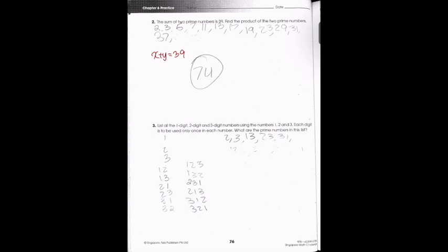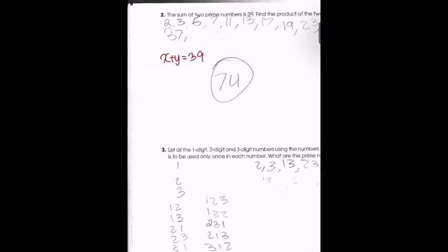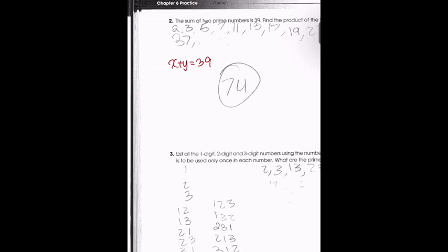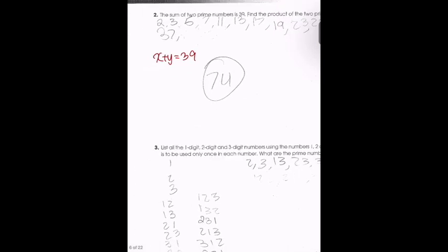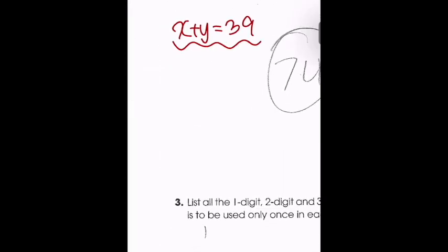The sum of two prime numbers is 39, so x plus y equals 39. We look for prime numbers that fit the equation. Two and 37 works. So the product would be 2 times 37, which is 74.